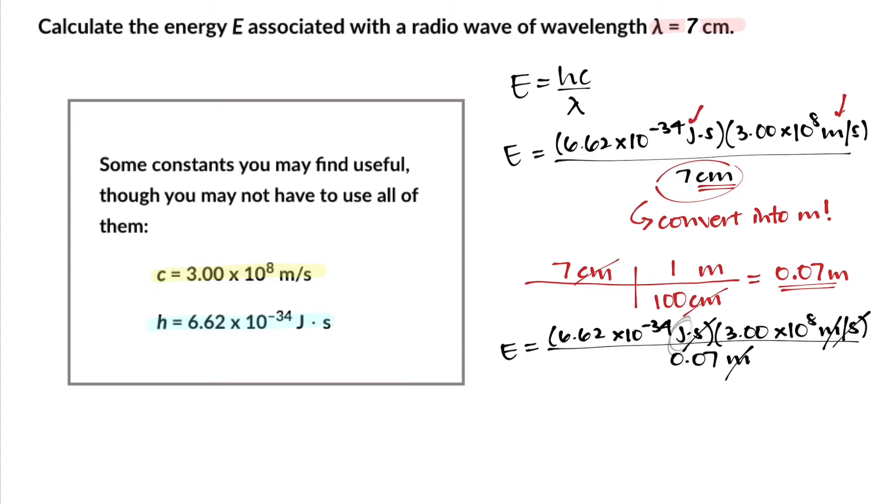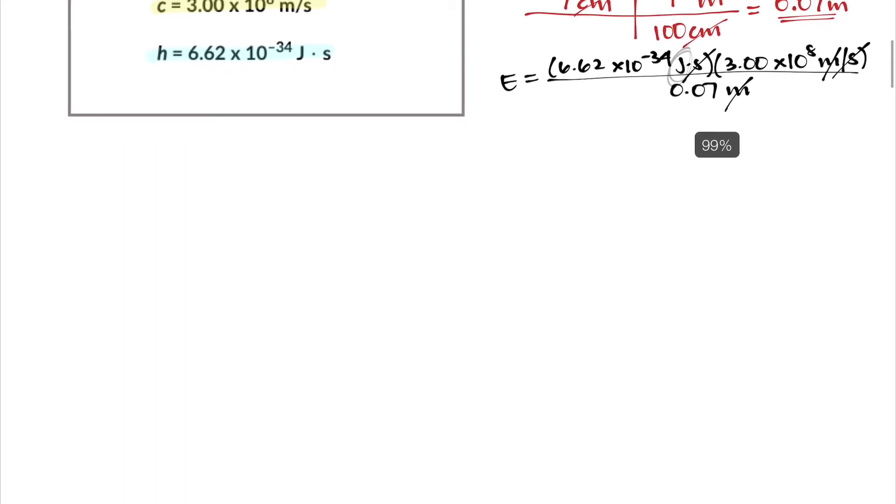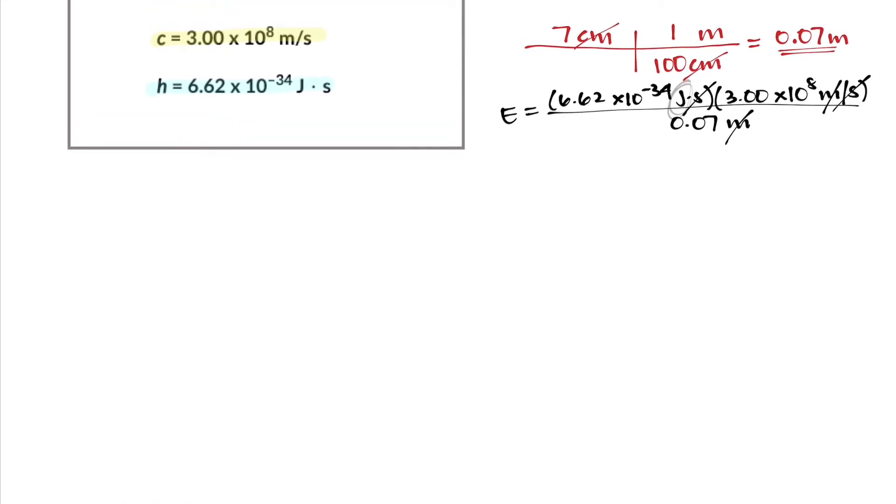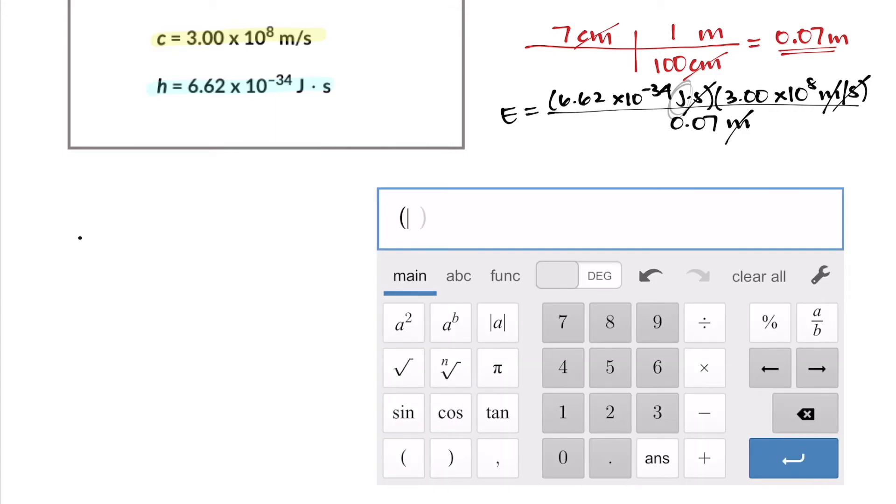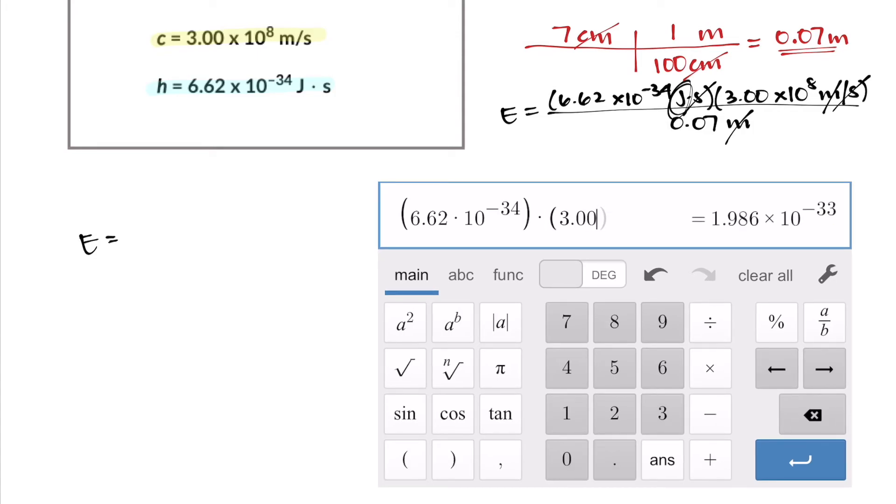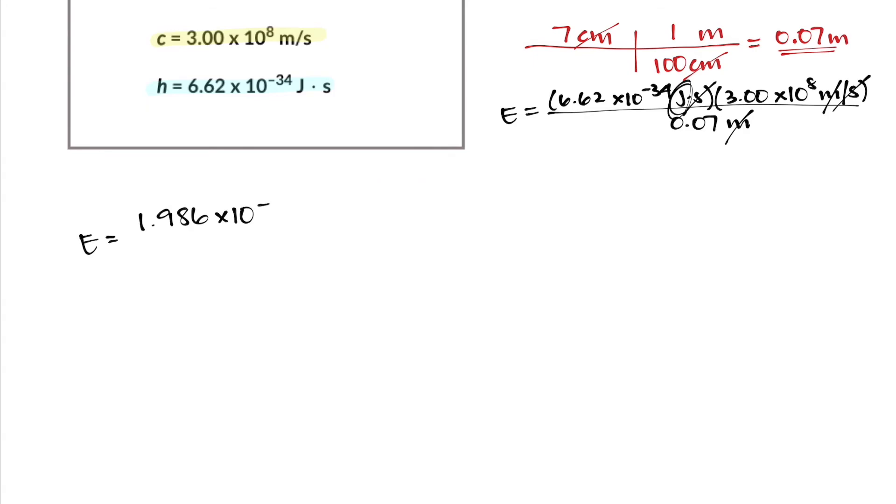To continue this problem we go ahead and multiply out the numbers in the numerator. So E = 6.62 × 10^-34 times 3.0 × 10^8, which is 1.986 × 10^-25.